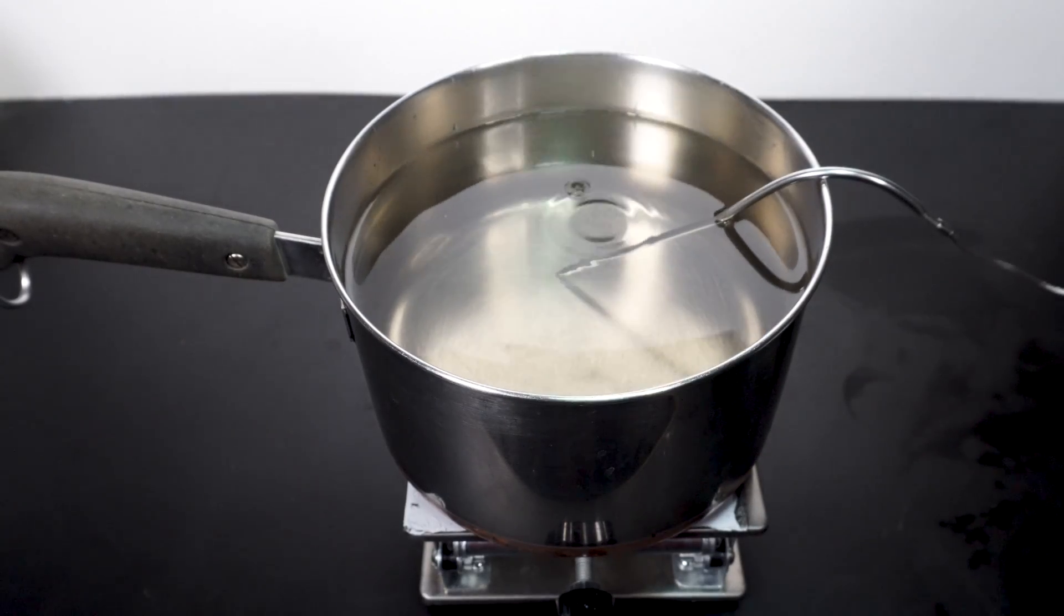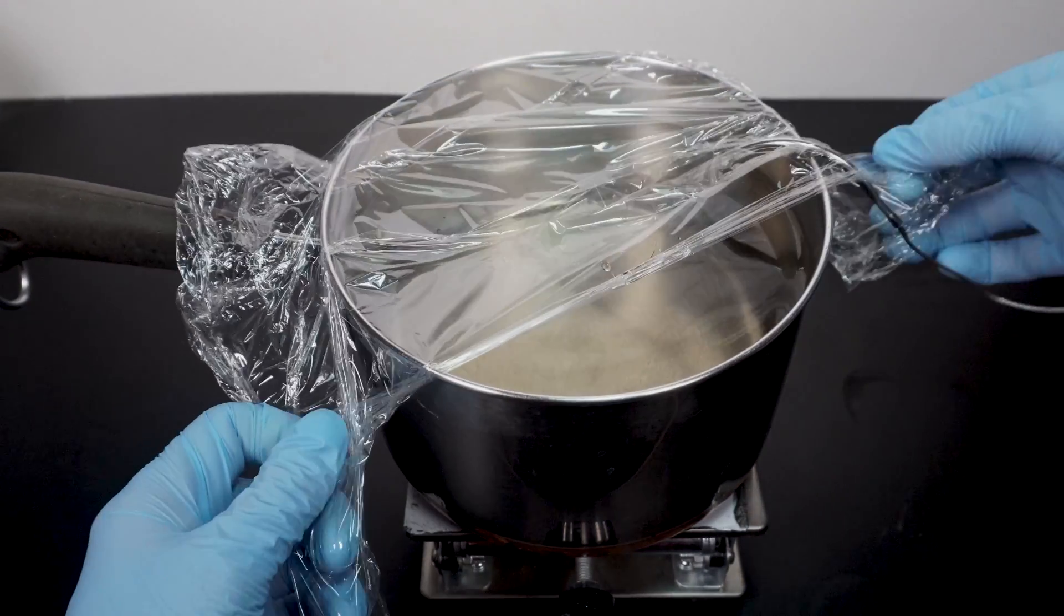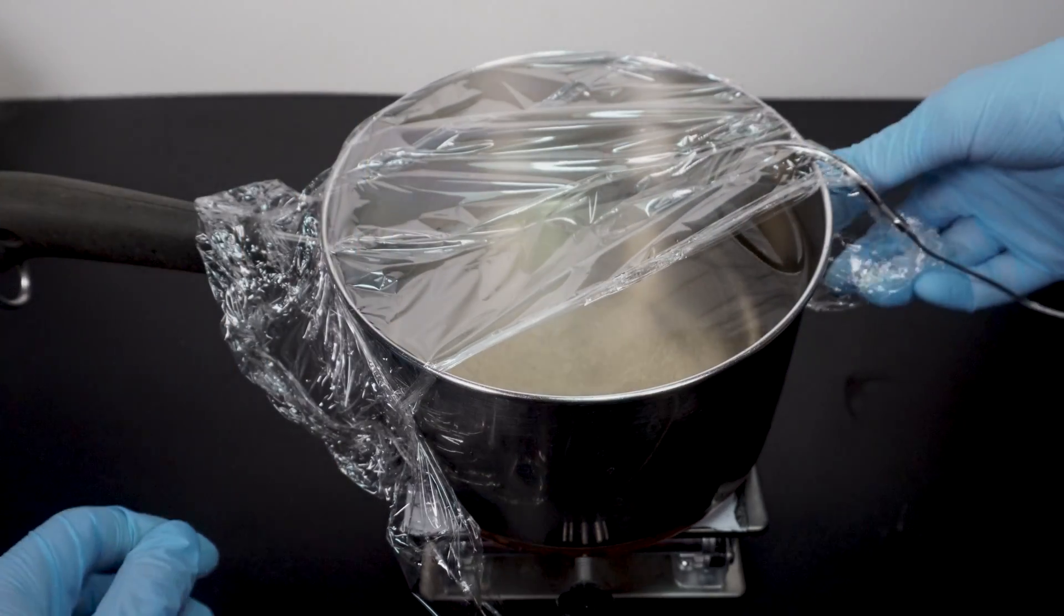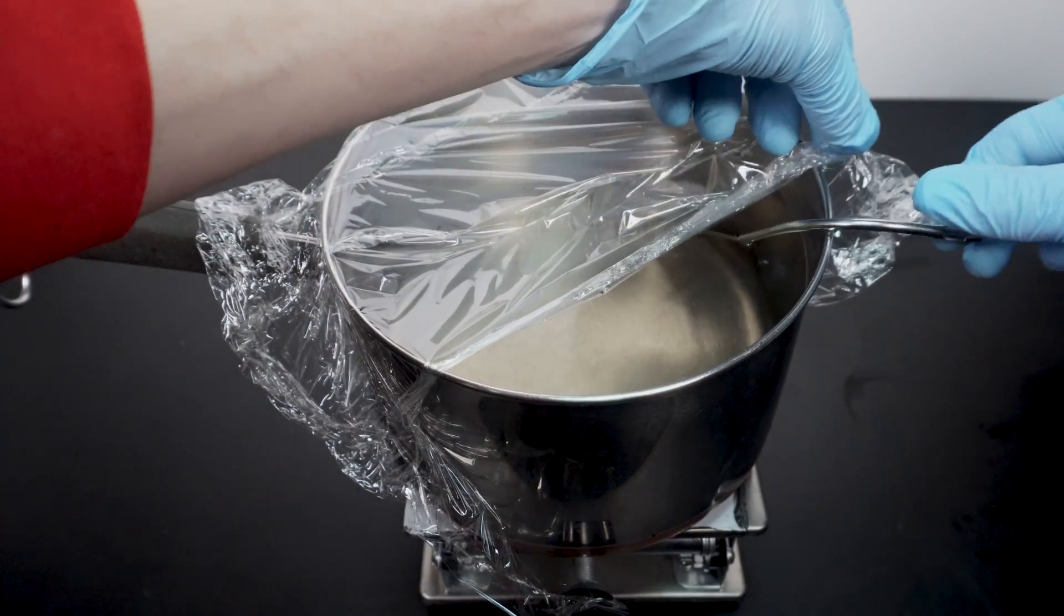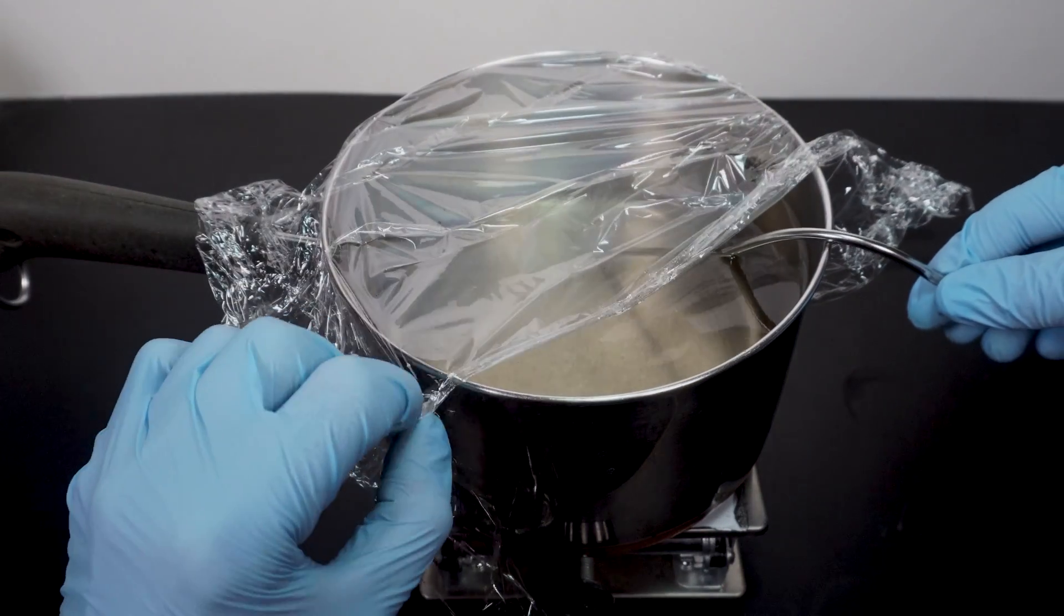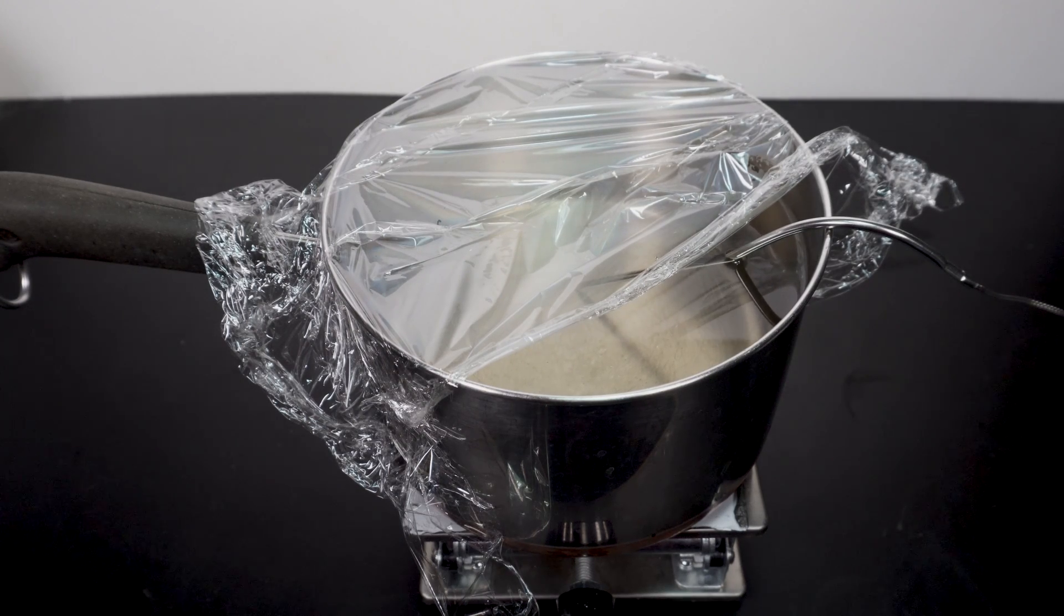But before using the sugar water, I have to get it down to around 80 degrees Fahrenheit, so I can mix it with the yeast and not harm it. If it is too hot, it will kill the yeast on contact. So I cover the pot with wrap and let it cool down slowly. In retrospect, I should have probably just dumped it in an ice bath to cool down quickly, but it was all the same in the end.